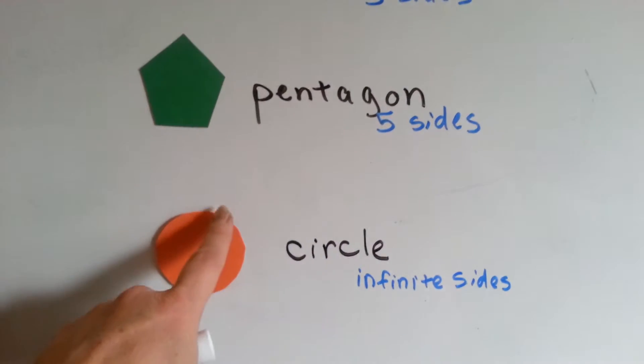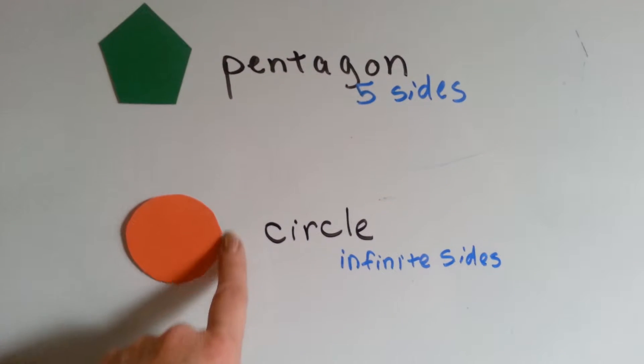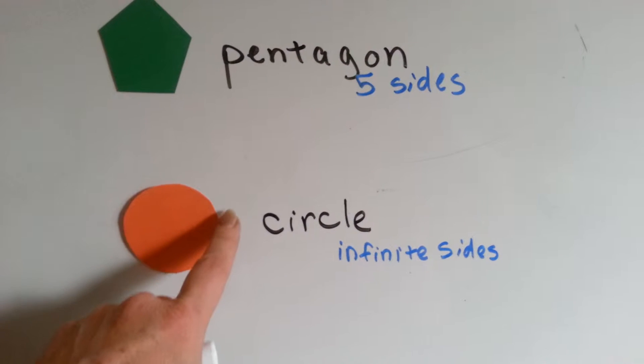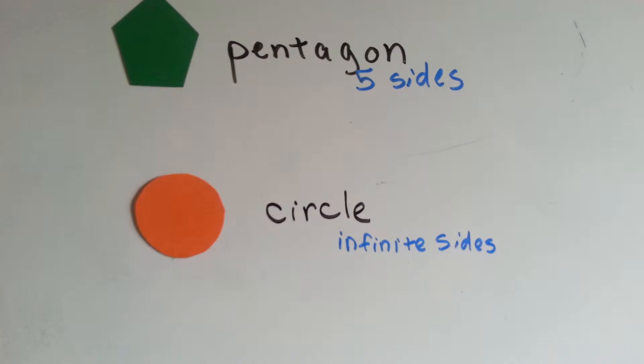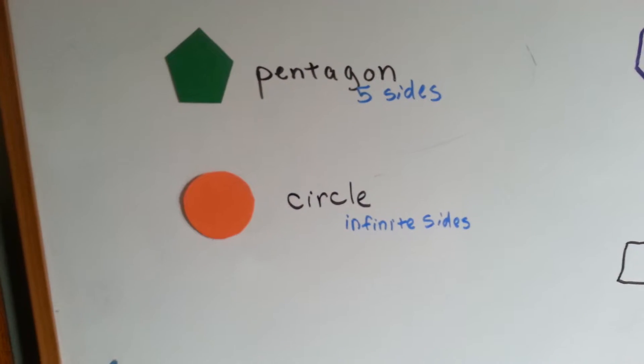And a circle—believe it or not—has an infinite amount of sides. Yeah, we'll discuss that in a future video, but a circle is actually an infinite number of tiny little sides that you can't see because there are 360 angles around a circle.